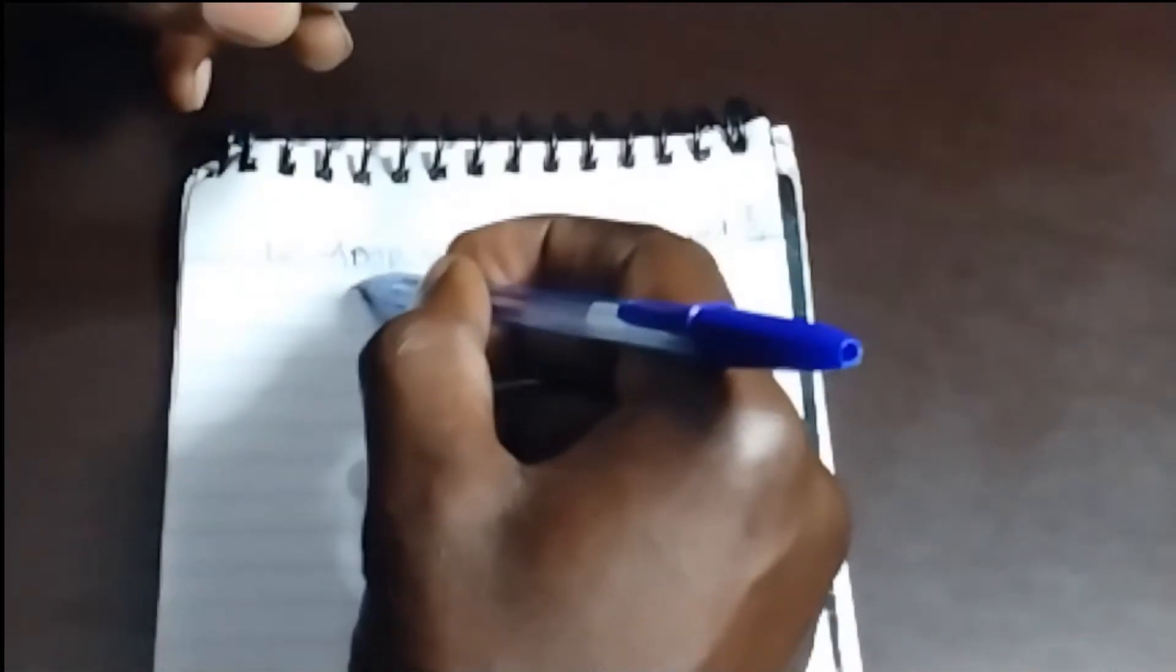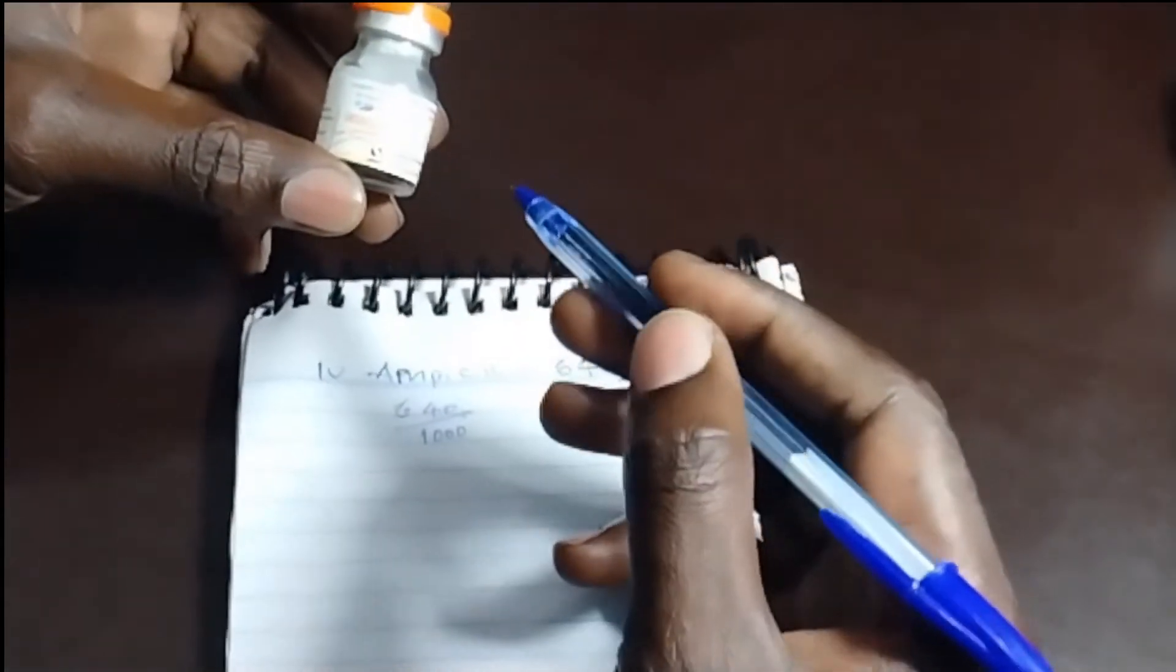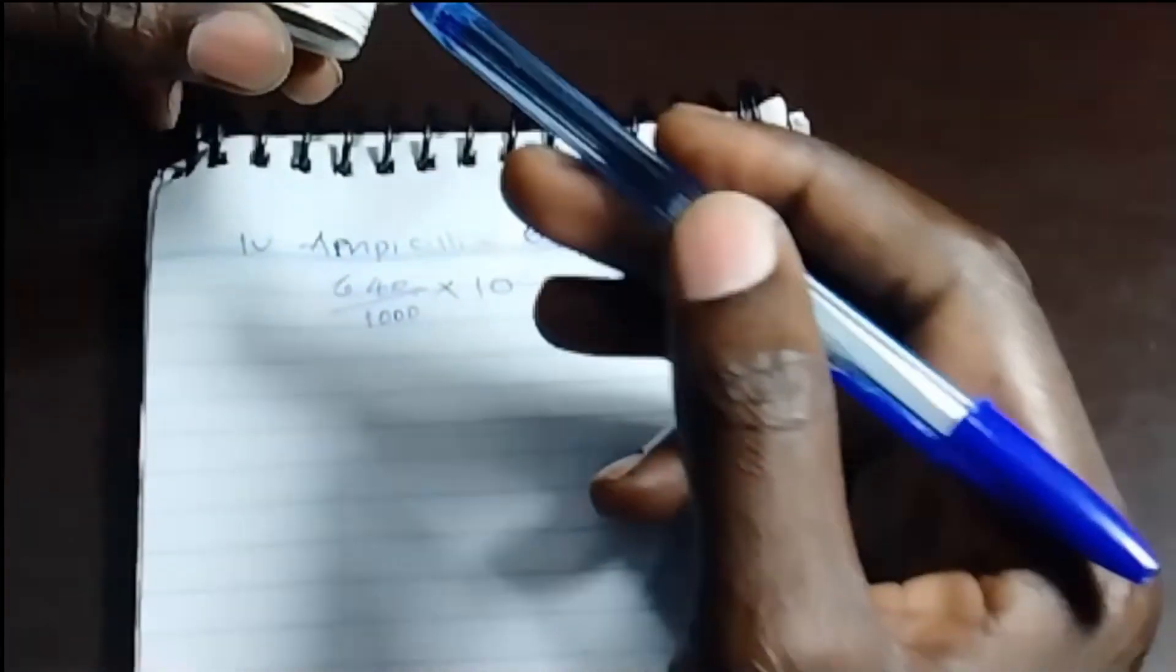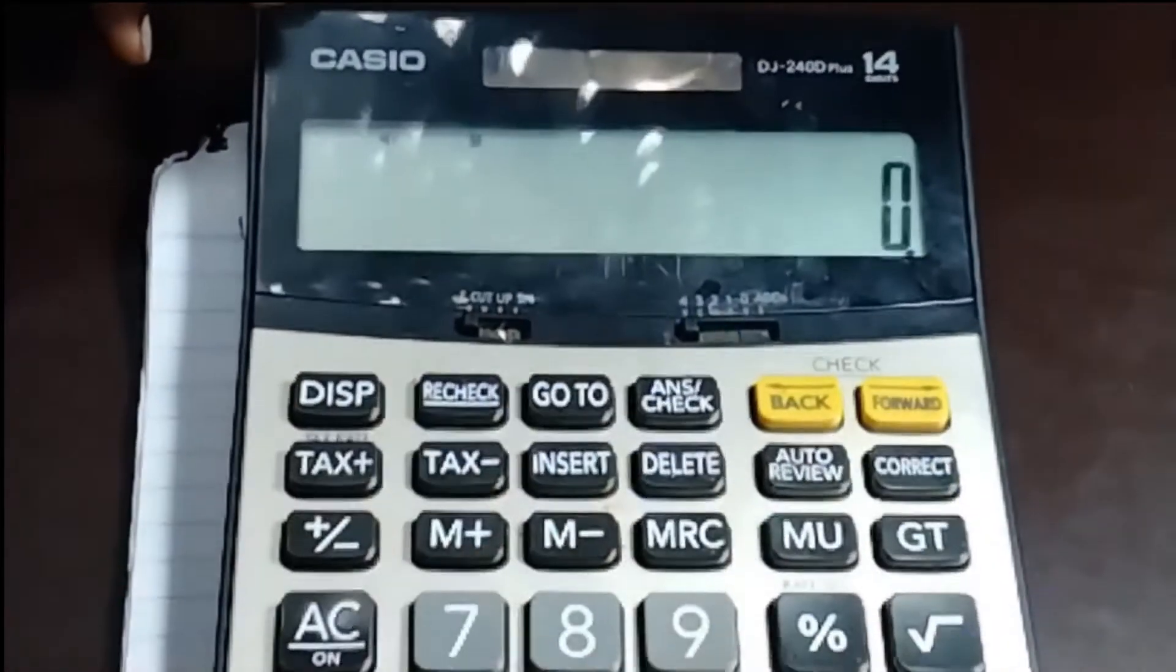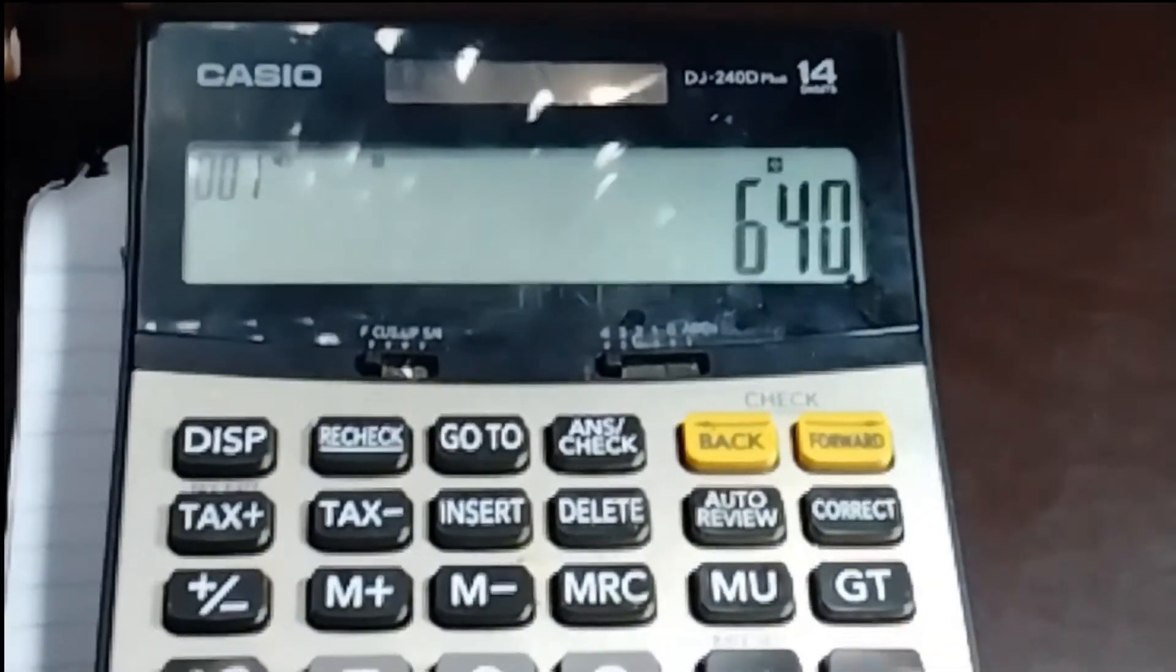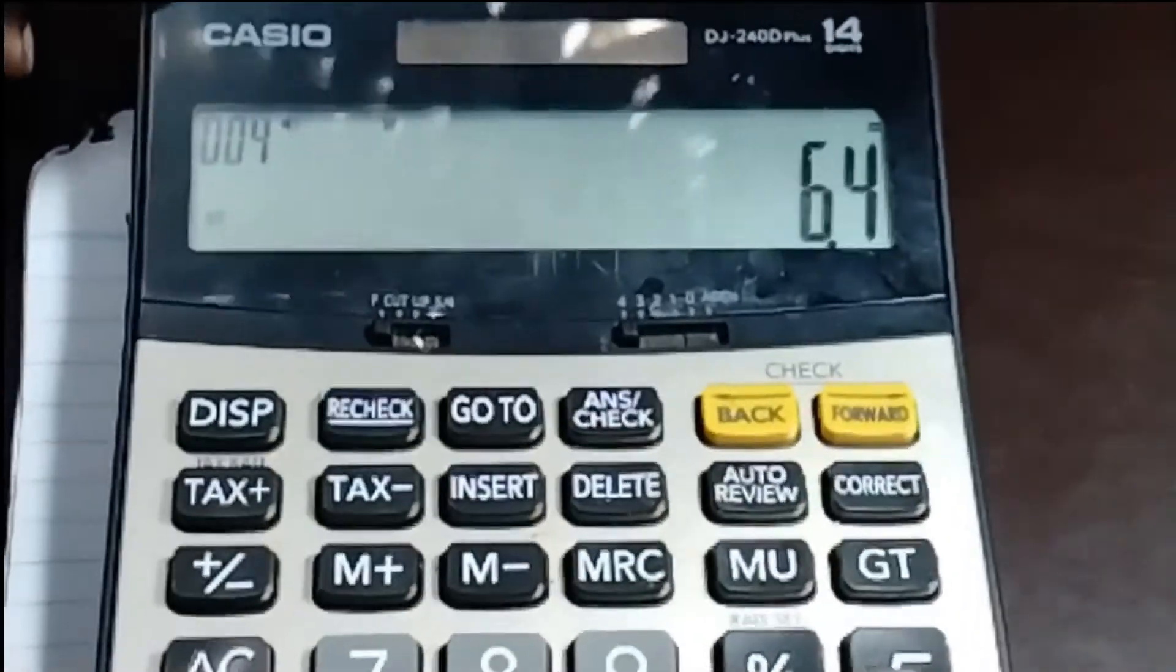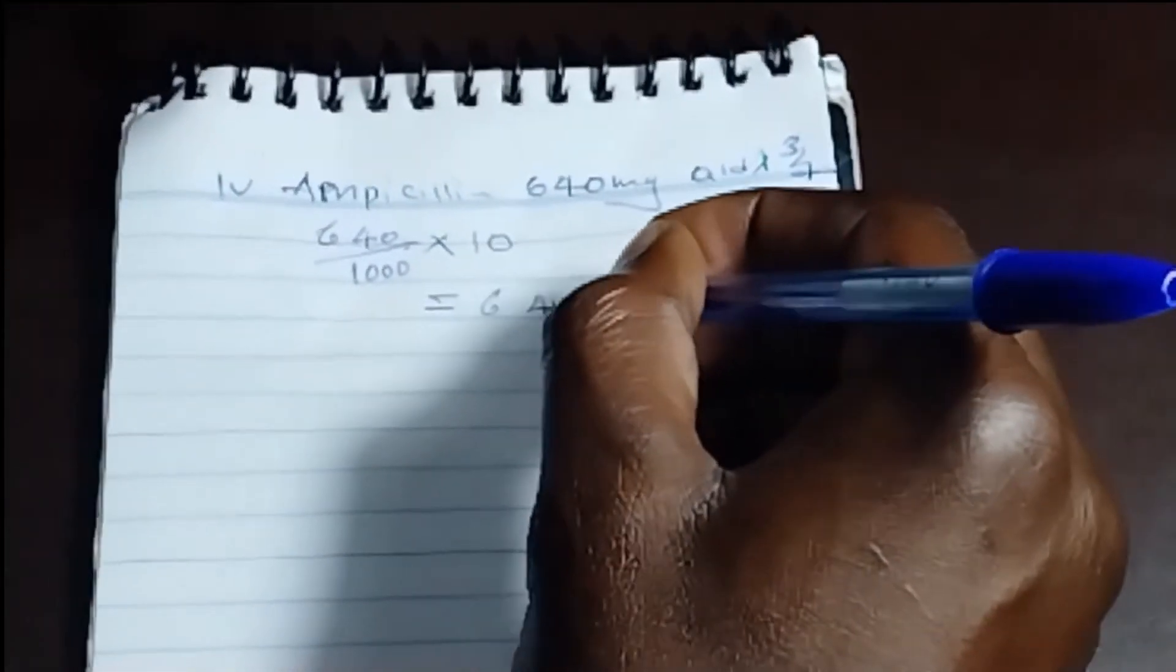So the prescribed dose is 640 divided by 1000. If we multiply this one times two, we will get 1000 times ten. Because the dilution will also increase, we are going to get 640 divided by 1000 times 10. We are going to get 6.4 mils.